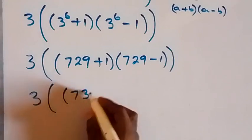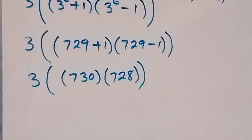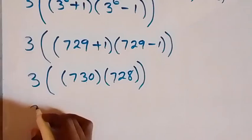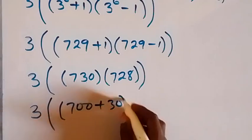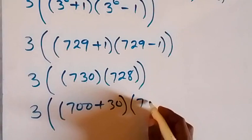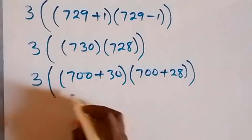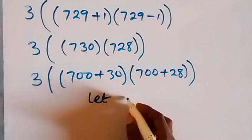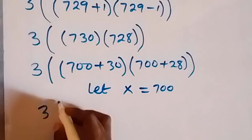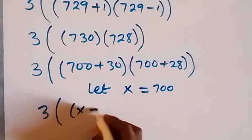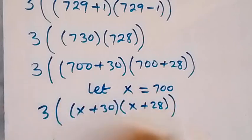Then also into bracket: 729 minus 1, which gives us 3 into bracket 730 times 728. Now let's write 730 as 700 plus 30, and 728 as 700 plus 28. For convenience, let's represent 700 with a letter: let x equal 700. This becomes 3 into bracket: x plus 30, multiplied by x plus 28.